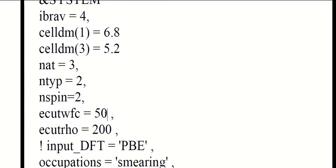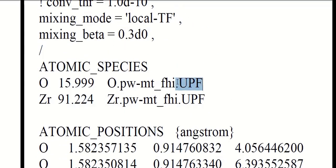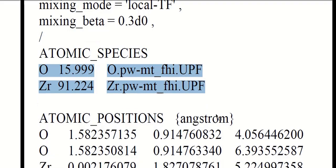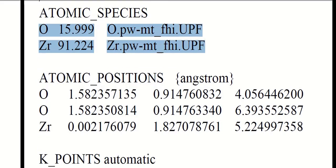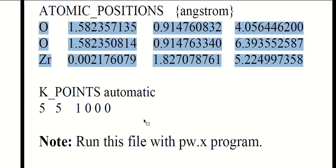This is the energy cutoff for wave function, and that is the energy cutoff for charge density and potential. This is the pseudopotential for oxygen atom, and this is the pseudopotential for zirconium atom. We are using LDA-based norm-conserving pseudopotentials in this calculation. These are the atomic positions of zirconium and oxygen atoms in the unit cell. We are using automatic K-points which are 5 5 1.